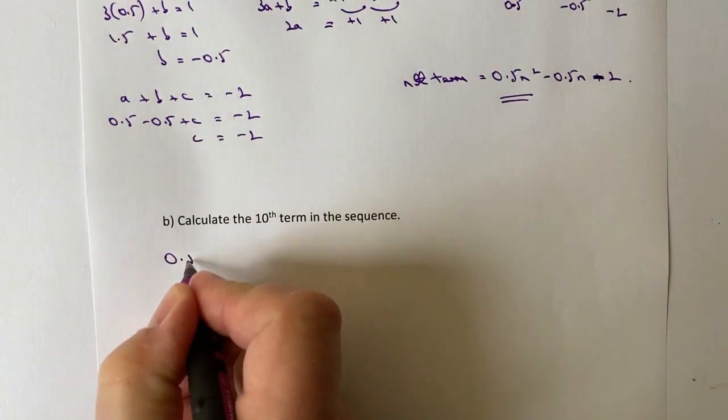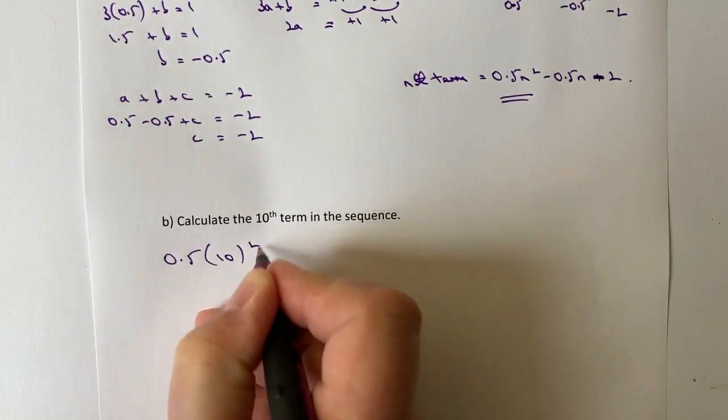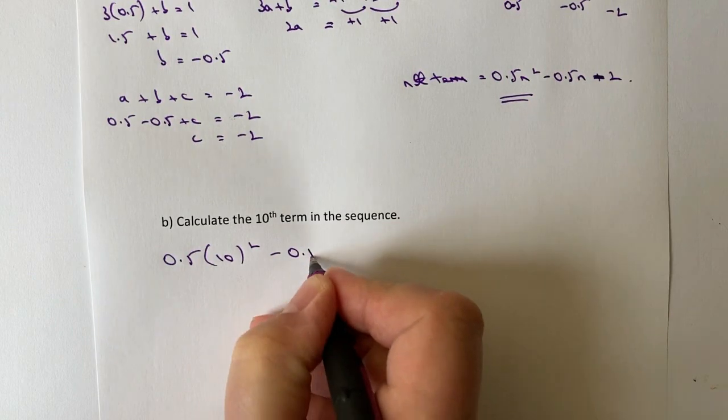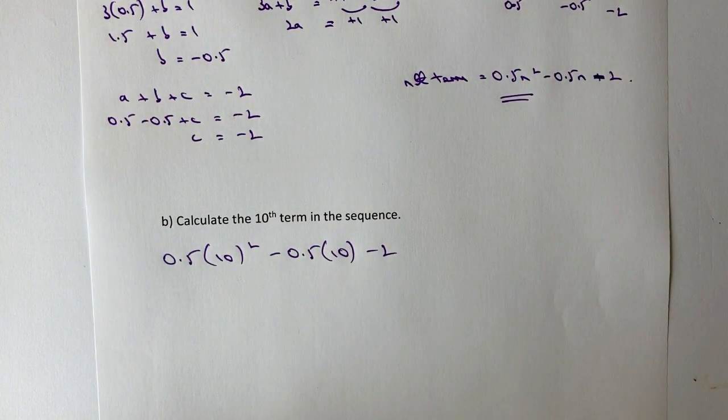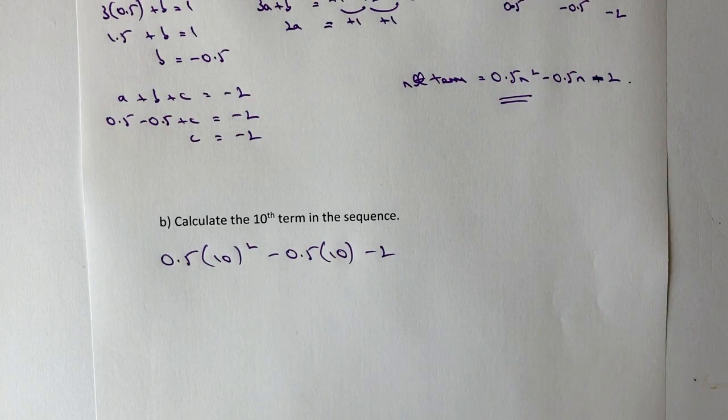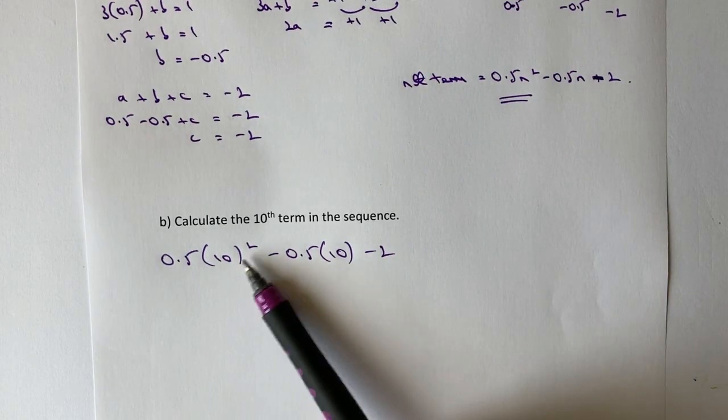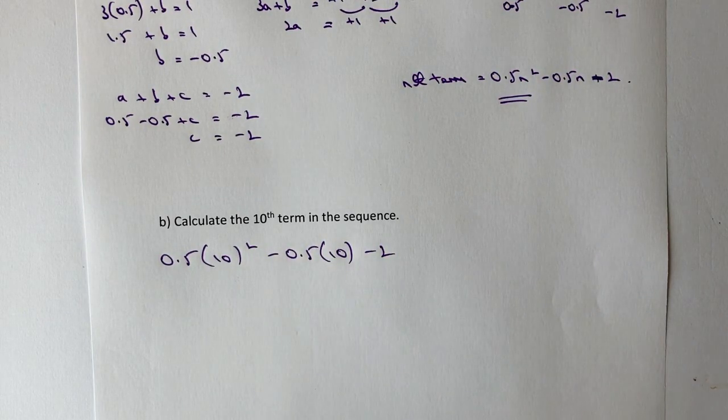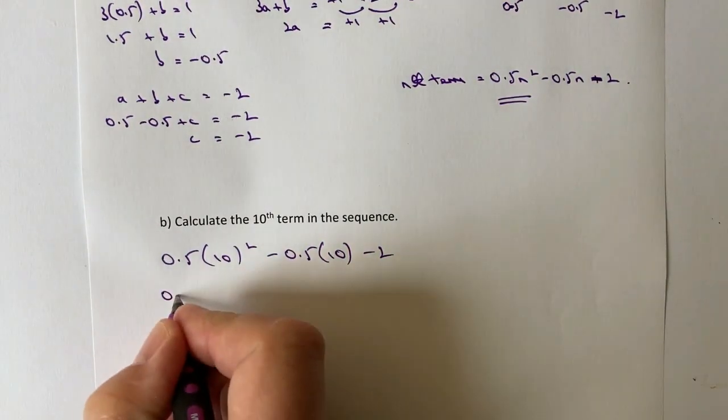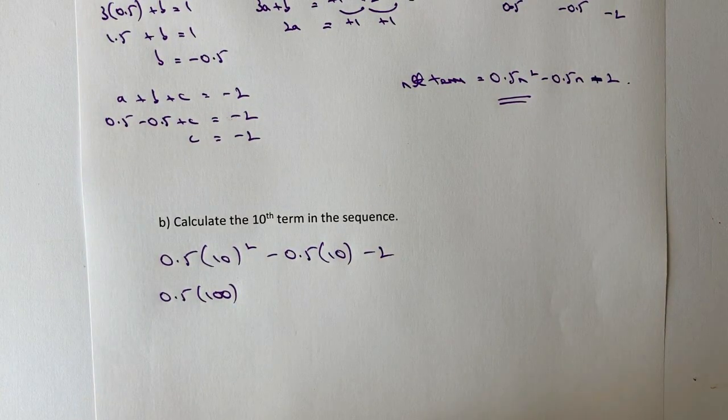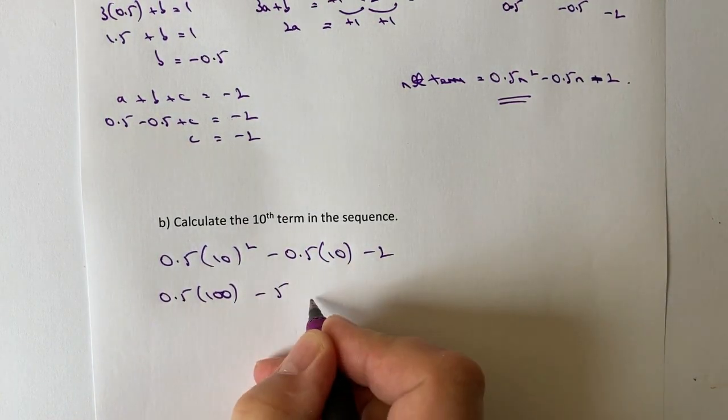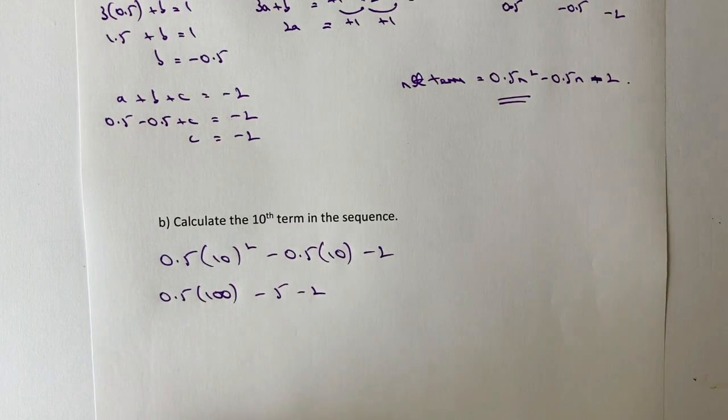So I'm going to have 0.5(10²) - 0.5 times 10 - 2. So let's just calculate that. Remember, I'm going to work with the brackets and the index first. So 10 squared is going to be 100. So I've got 0.5 times 100, and then I've got -0.5 times 10, which is going to be -5, and then -2 at the end.